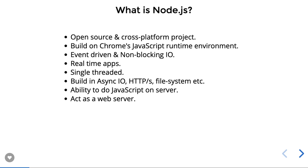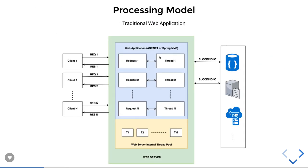Now let's look at the processing model. For languages like Java, Python, Ruby, and Node.js, how does a web server typically work? In Java, which is multi-threaded, every incoming request creates its own thread. So if there are a thousand requests, a thousand threads are created. Each thread is responsible for managing that request's lifecycle, and the web server maintains an internal thread pool for those thousand requests.